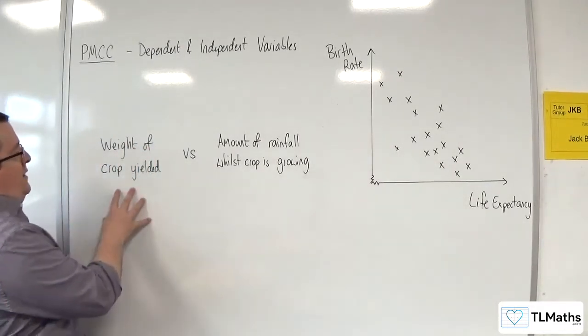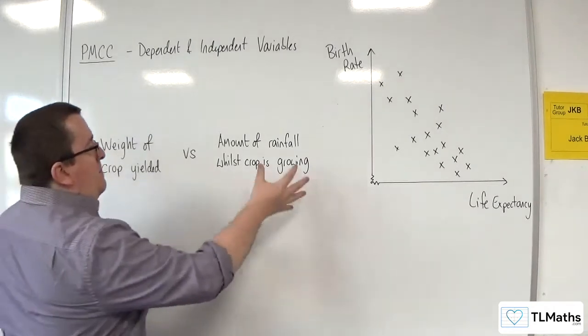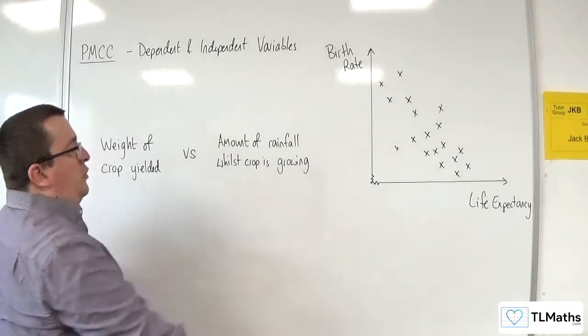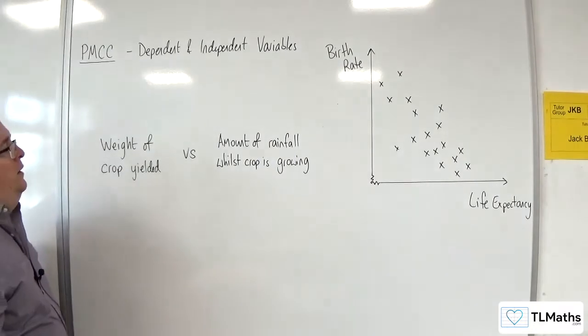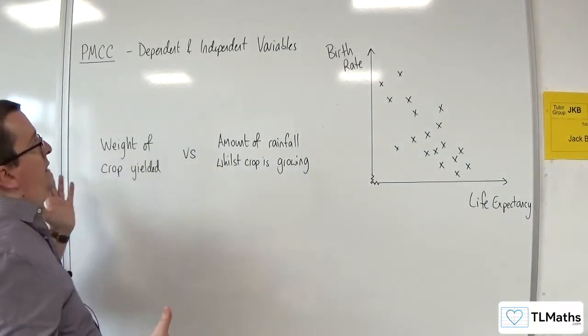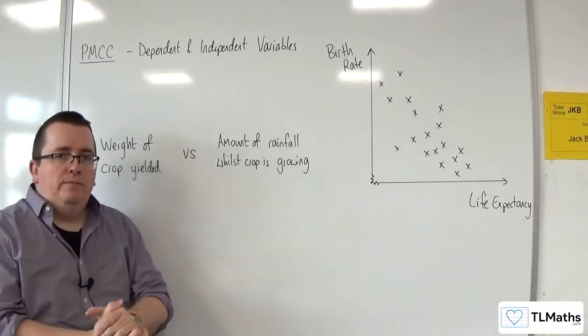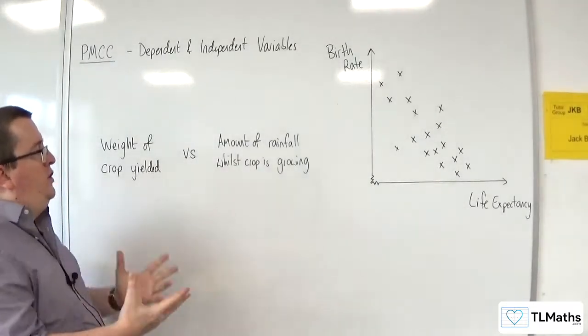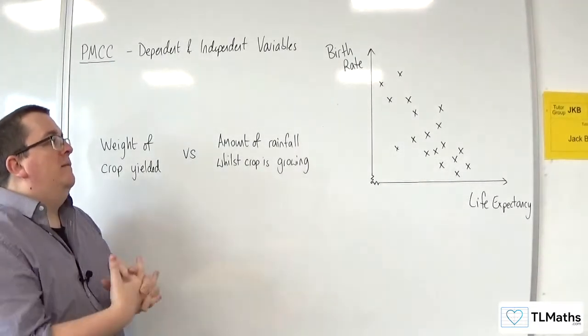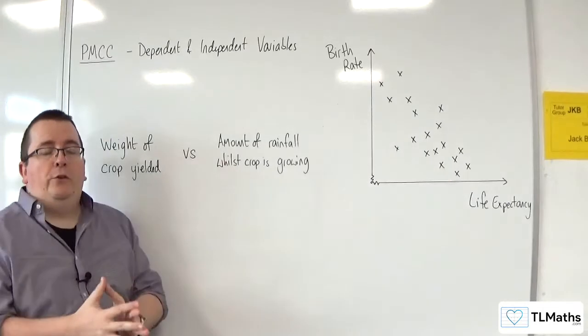We've got the weight of crop yielded and the amount of rainfall whilst the crop is growing. So, which one of these is the independent variable? Now, if I just say which is the independent variable, that might be quite difficult to answer.